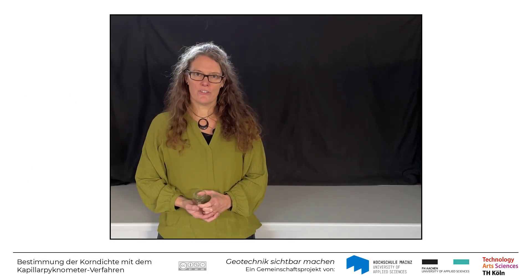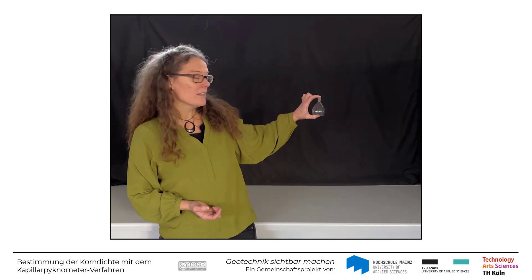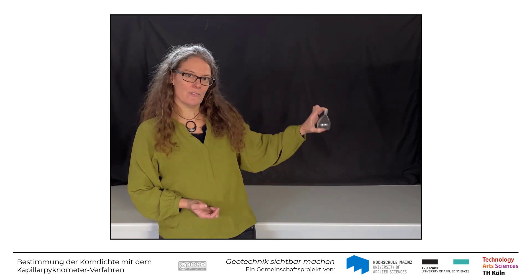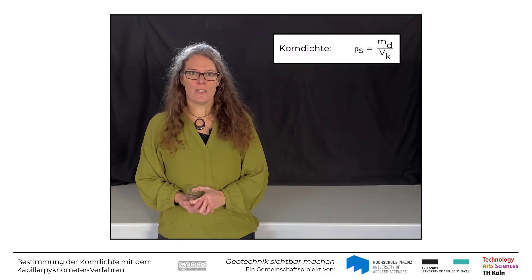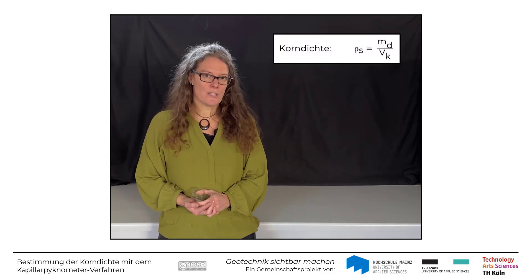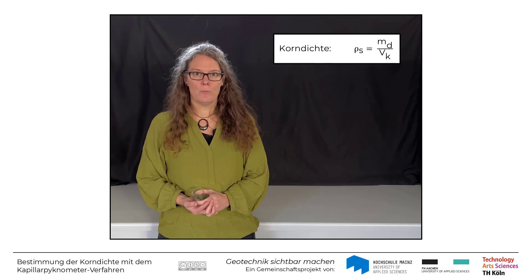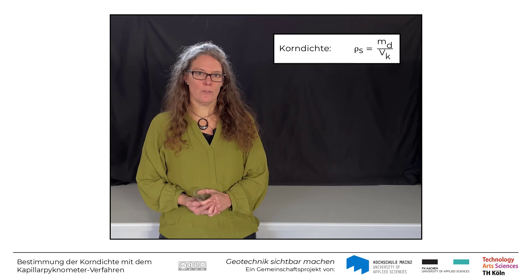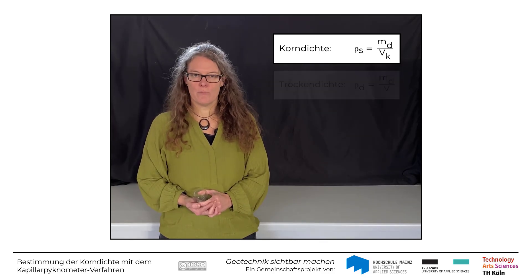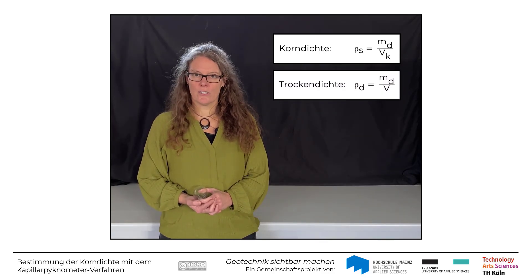In diesem Lehrvideo stellen wir Ihnen die Ermittlung der Korndichte mithilfe eines Kapillarphygnometers vor. Die Korndichte Rho-S setzt die Trockenmasse Md der Körner einer Bodenprobe ins Verhältnis zum Volumen Vk, das von den Körnern der Bodenprobe eingenommen wird.